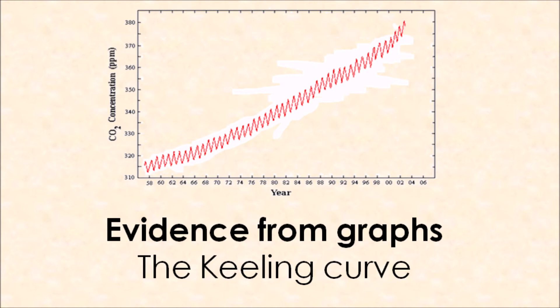What resulted is that the sampling conducted regularly ever since has created this graph known as the Keeling Curve. As you can see on the graph on the screen, it shows increased levels of carbon dioxide in the atmosphere at that location. Scientists are now using the Keeling Curve to suggest that if CO2 is increasing in Hawaii — where there is little industry and little traffic congestion — it possibly is the same in various locations around the world, and therefore suggests we are seeing increased levels of carbon dioxide in our atmosphere.